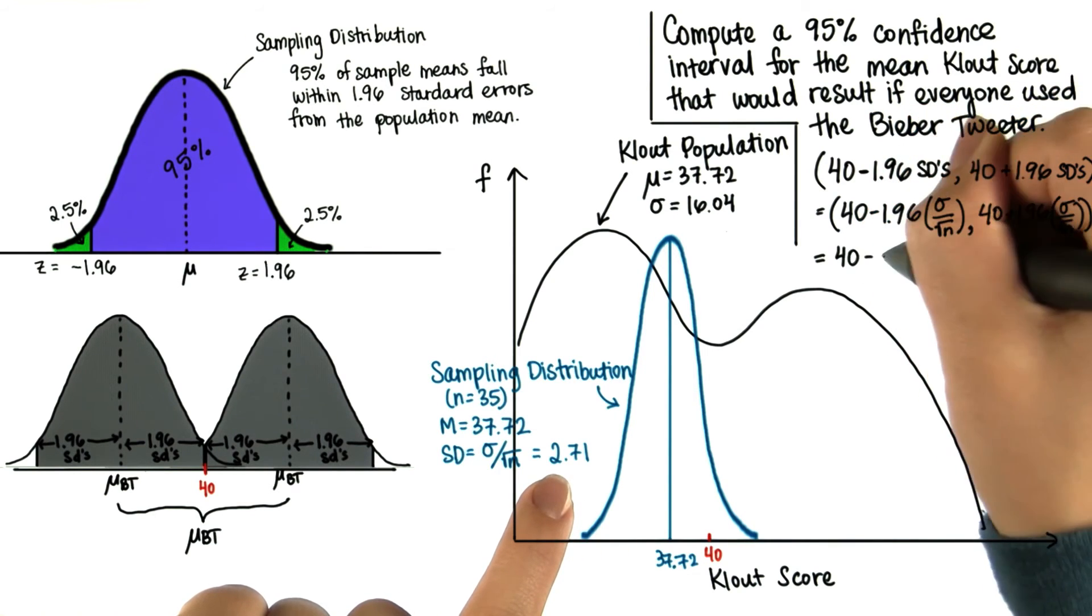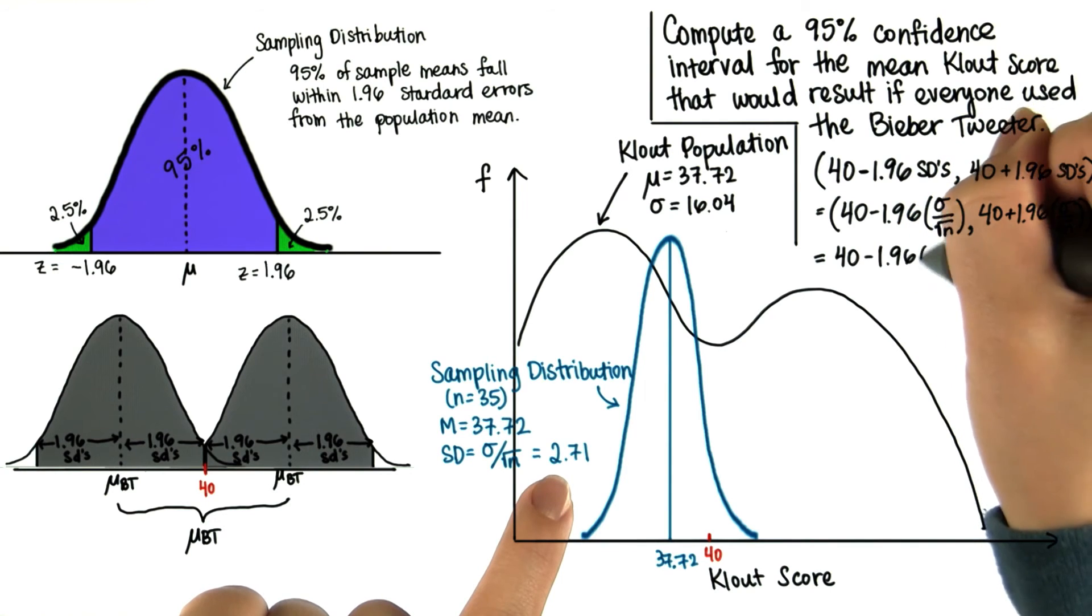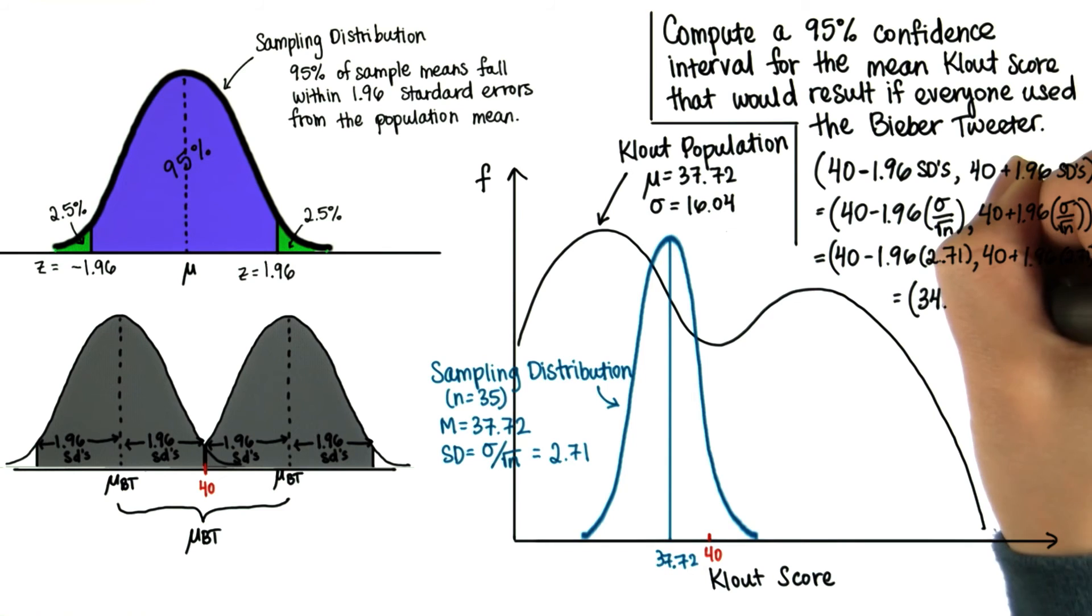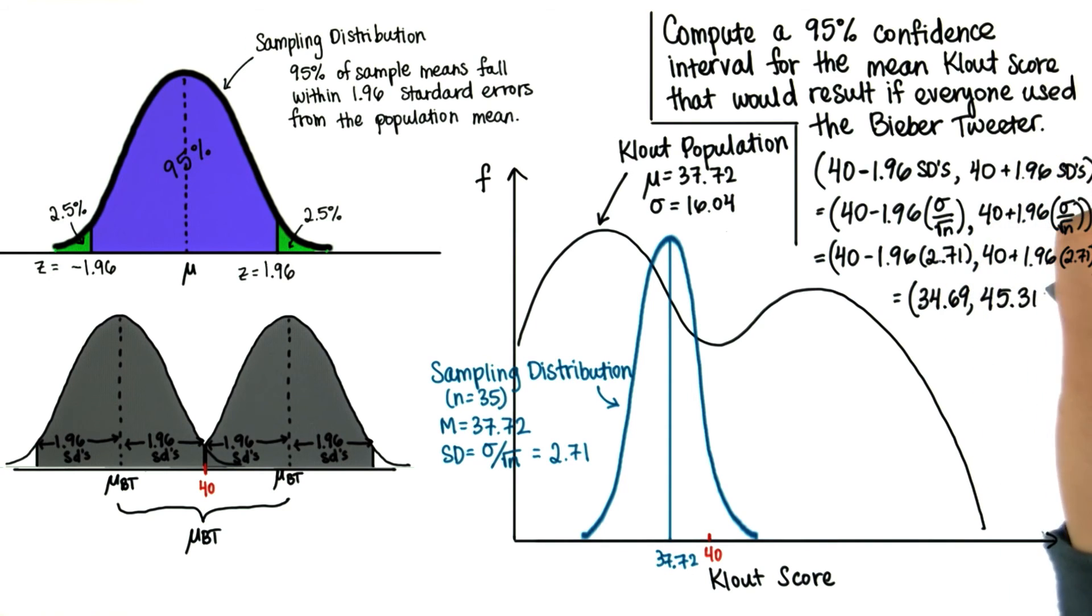So, we have 40 minus 1.96 times 2.71 and 40 plus 1.96 times 2.71. So, this is about 34.69 to 45.31.